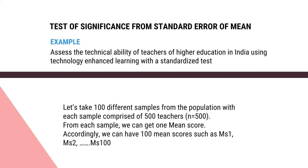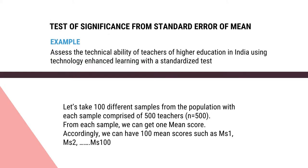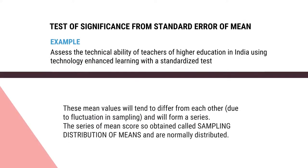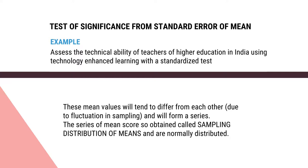Let us take 100 different samples — sample 1, sample 2, sample 3, sample 4, sample 5, up to sample 100. Each sample size is 500. From each sample we can get one sample mean, so the mean of the first sample is Ms1, second is Ms2, third is Ms3, and so on. These 100 sample means form a complete series: Ms1, Ms2, Ms3, ... Ms100. The mean values will tend to differ from each other due to fluctuation in sampling. This series so obtained is called the sampling distribution of mean, and the series is normally distributed.